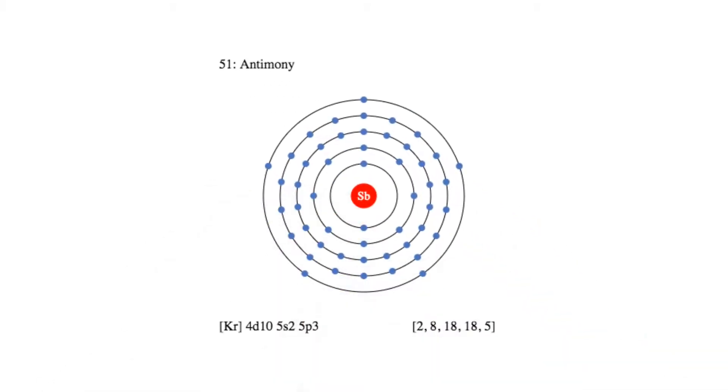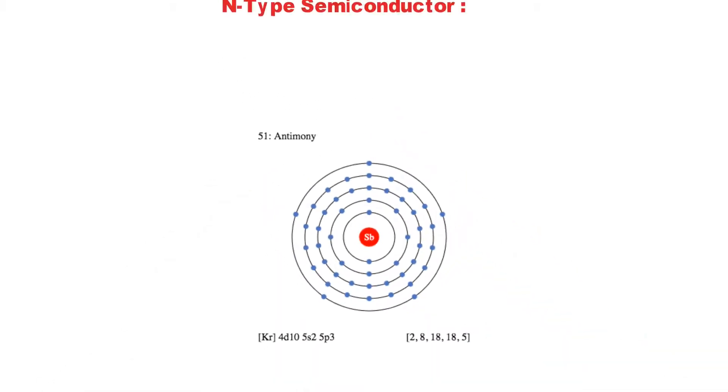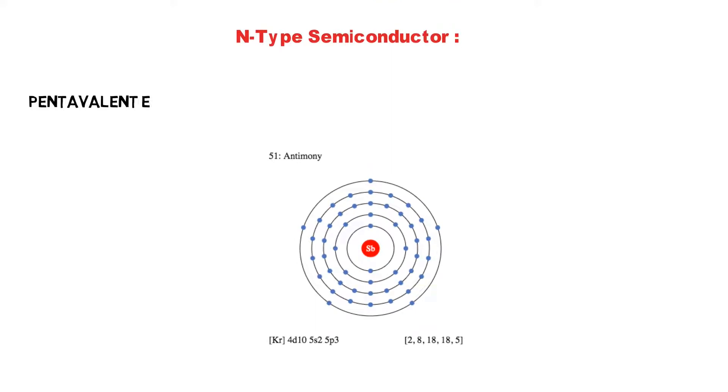To make N-type material, a pentavalent impurity atom is added to it. A pentavalent impurity is an atom with five valence electrons such as arsenic, phosphorus, bismuth and antimony. As illustrated in figure, each pentavalent atom forms covalent bonds with four adjacent silicon atoms.